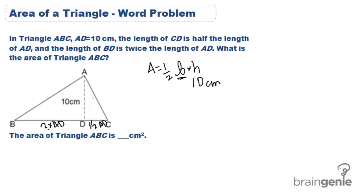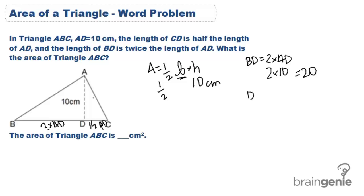Now we have to solve for the base. We know that the base is going to be BD plus DC. BD is 2 times AD, and AD is 10, so BD is 20. DC is equal to one half of AD — half of 10 is 5. So 20 plus 5 gives us 25. Our base is 25.